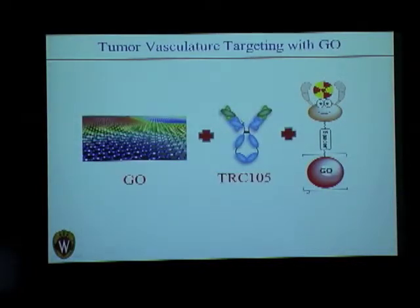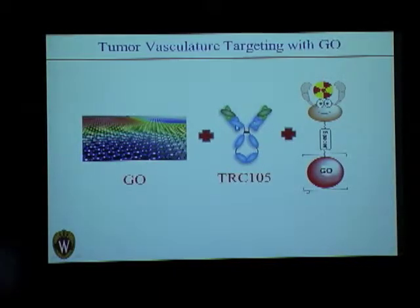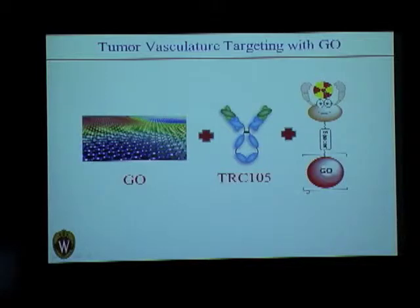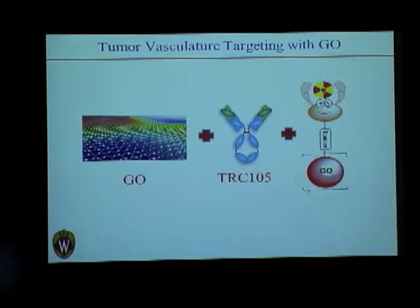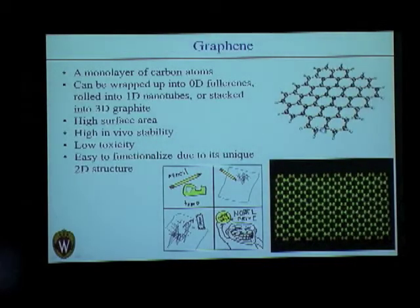Moving on to my first project: we have graphene oxide nanosheets onto which we conjugate TRC-105, our antibody, and also conjugate our radiotracer using NOTA — a chelator for our radionuclides. These constructs were then tested in vitro, in vivo, and by microscopy studies and FACS analysis.